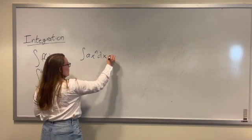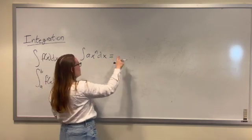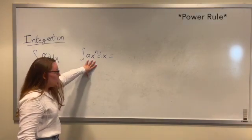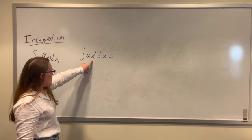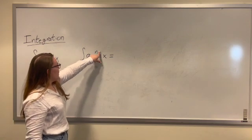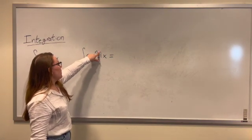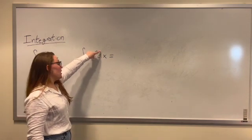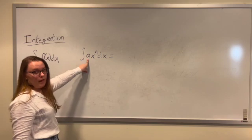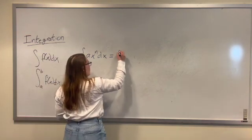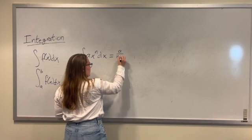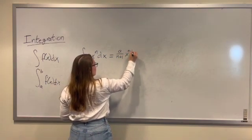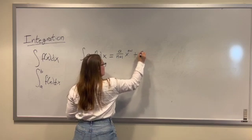This is then equal to, so if you take the opposite, if you remember for the product rule for derivatives we multiply by the exponent and subtract one in the exponent. So we're going to first add one in the exponent and then divide by that value. So we will have a divided by n plus one x to the n plus one plus c.